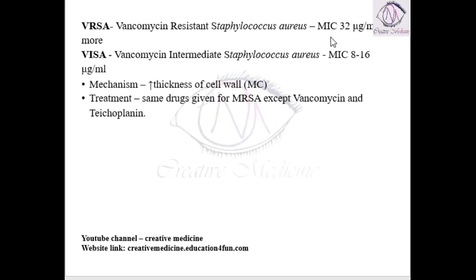Whereas in Vancomycin Intermediate Staphylococcus Aureus, the minimum inhibitory concentration should be around 8 to 16 microgram per ml.